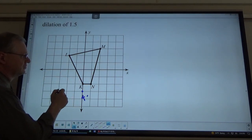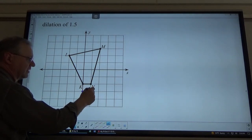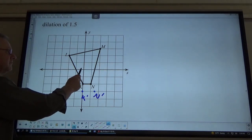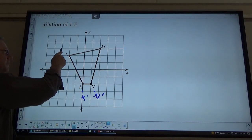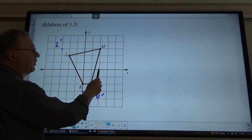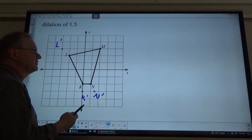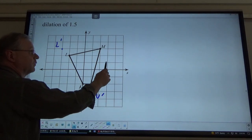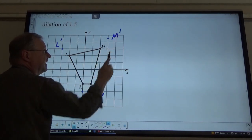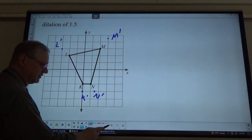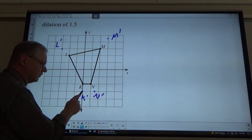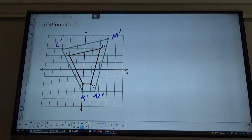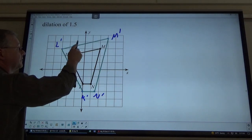Positive 1 down 2. Positive 1½ down 3. There's N'. L is negative 2, positive 2. So, that's negative 2 times 1½ is 3. So, negative 3, positive 3. There's L'. M is at positive 2, positive 3. 2 times 1½ is 3. 3 times 1½ is 1, 2, 3, 4, and a half. There's M'. So, now, if we just connect this up, you'll be able to see your final result here. And there is your dilation of this one. There we go. That's a little better.